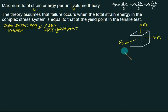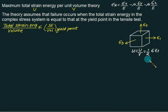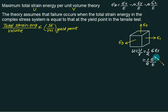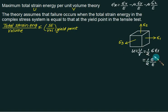Strain energy per unit volume is given by: u = U/V = (1/2) × stress × strain = (1/2) × stress²/E. At the yield point, the right-hand side becomes (1/2) × SYT²/E. This is the strain energy for the volume along the X, Y, and Z directions.